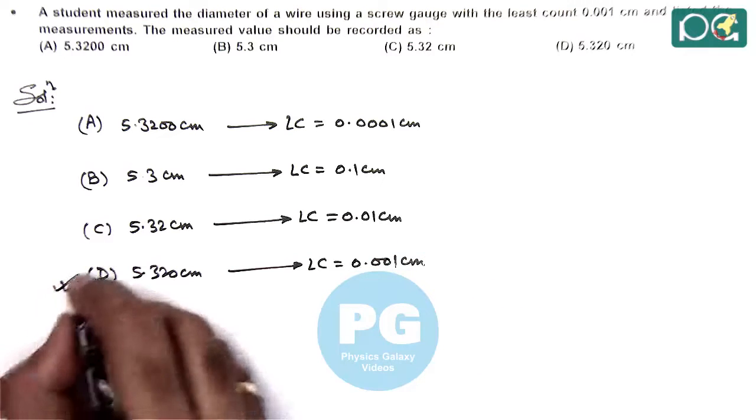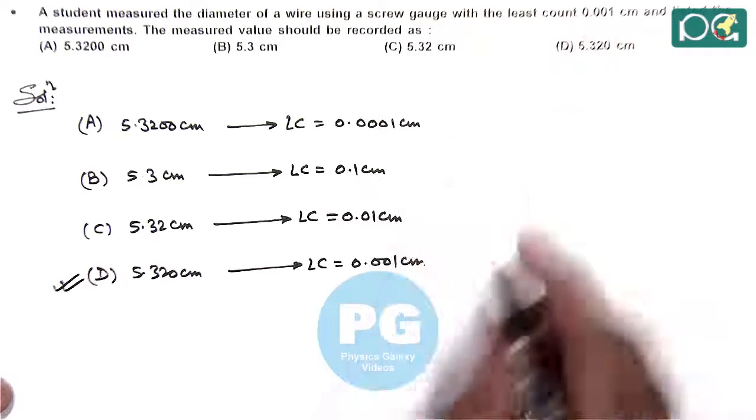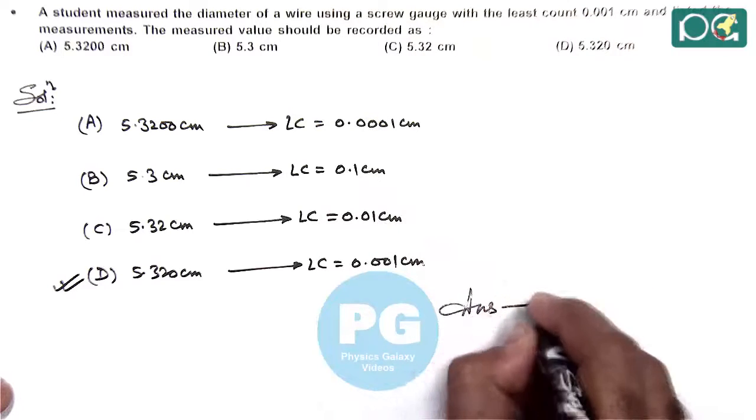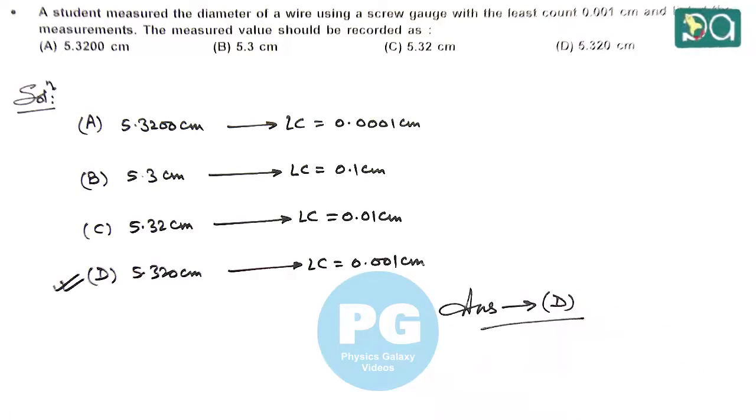Here we can see option D matches with the least count of the given screw gauge. So the answer to this question will be chosen as option D.